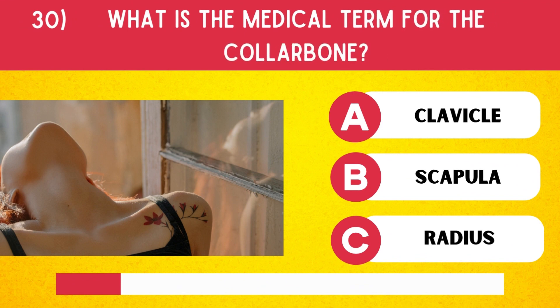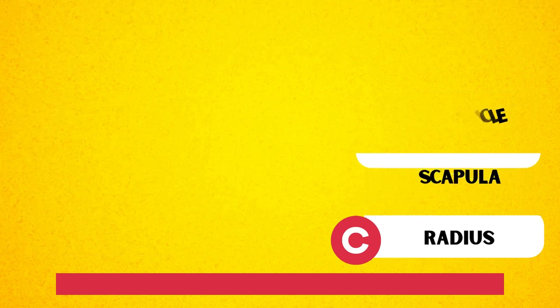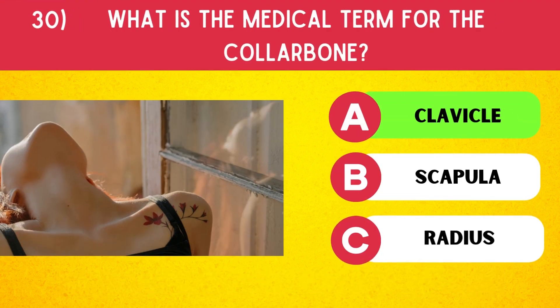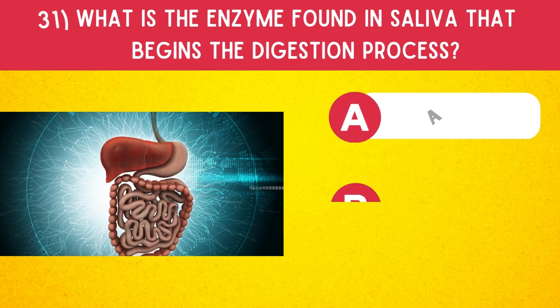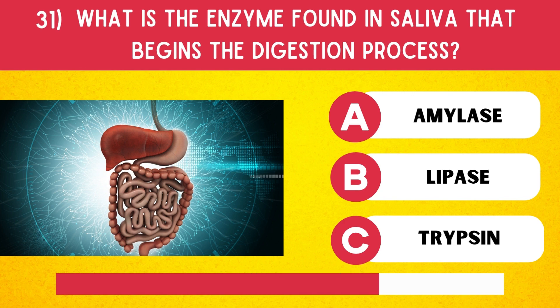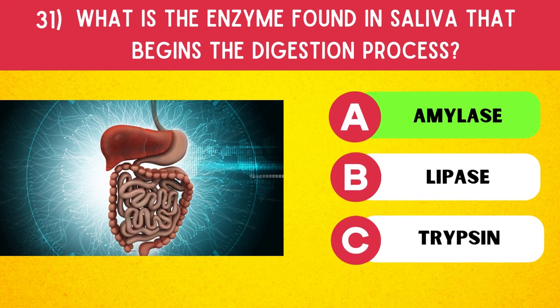What is the medical term for the collarbone? Clavicle. What is the enzyme found in saliva that begins the digestion process? Amylase.